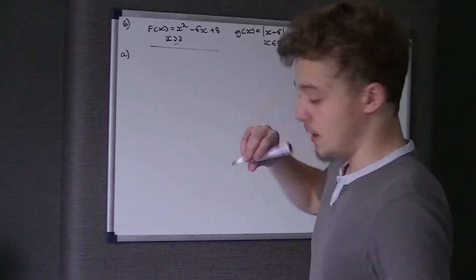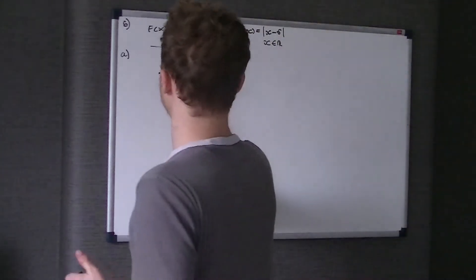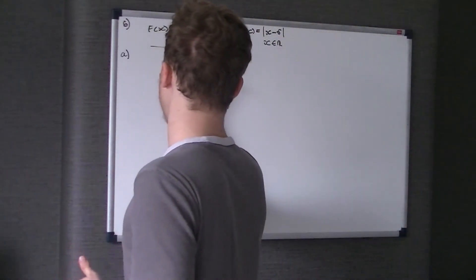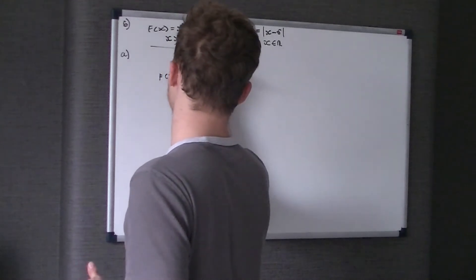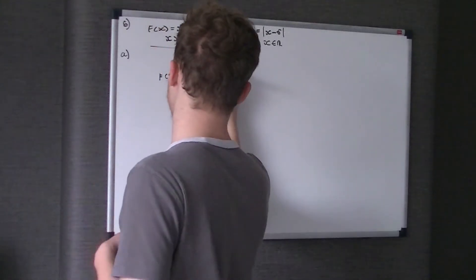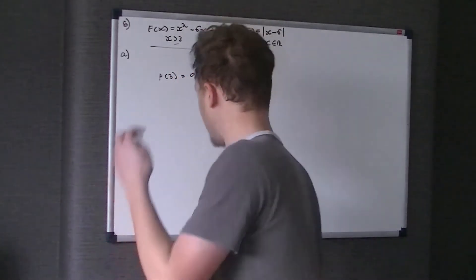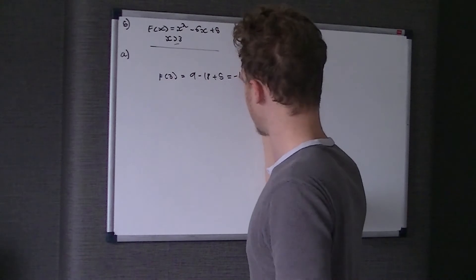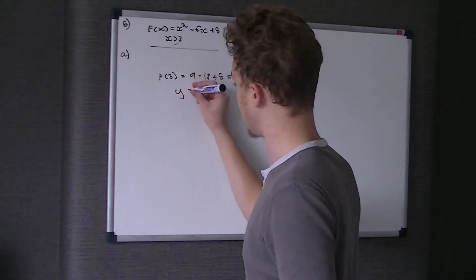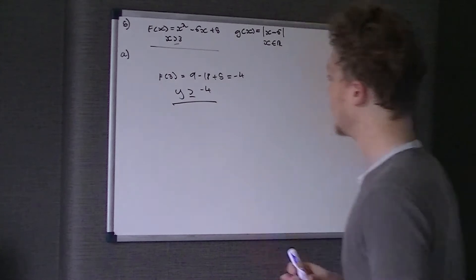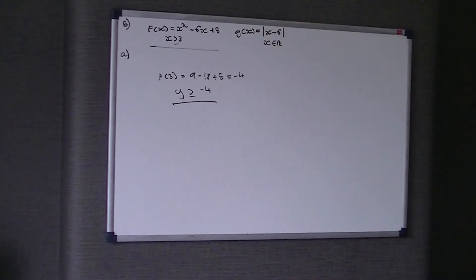So what we simply do is substitute x to be 3 into this equation. So f(3), 3 squared is 9, take 6 times 3 which is 18, plus 5. That all comes to minus 4. Therefore y is greater than or equal to minus 4.